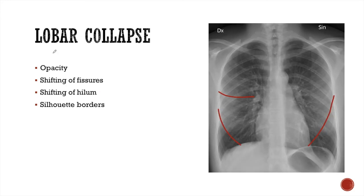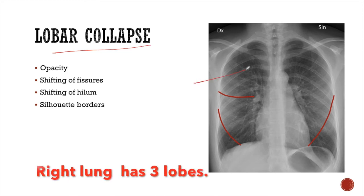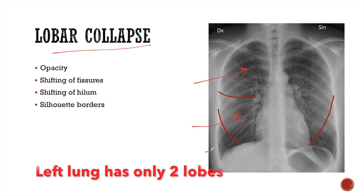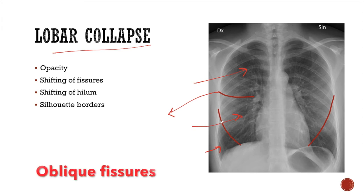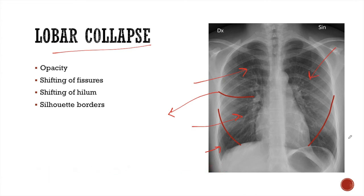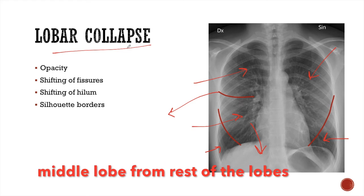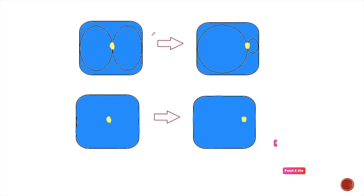What is lobar collapse? The lung is composed of lobes. The right lung has three lobes and the left lung has only two lobes. The lobes are separated by fissures. The oblique fissure on both sides separates the upper lobe from the lower lobe, and the horizontal fissure separates the middle lobe from the rest of the lobes. To understand lobar collapse, understand volume loss again — just remember the same balloons discussed earlier.